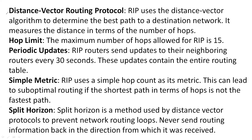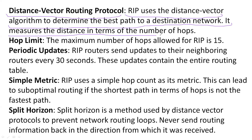The Routing Information Protocol uses the distance vector algorithm to determine the best path from source to destination. It measures distance in terms of number of hops. If there are three or four different paths to forward the data, the path with the least hop count will be the best path — and this does not depend on the bandwidth of the path. The maximum number of hops allowed is 15.